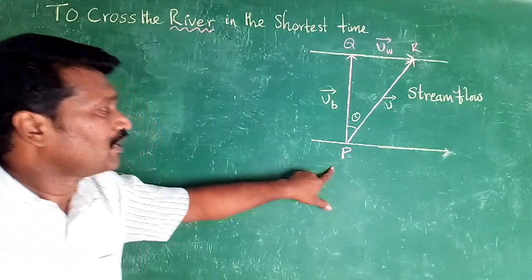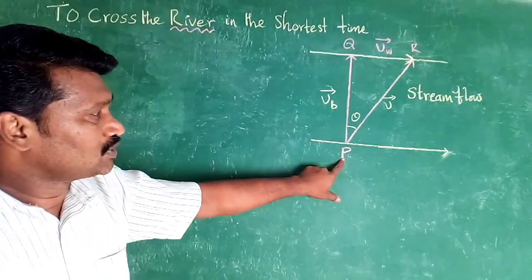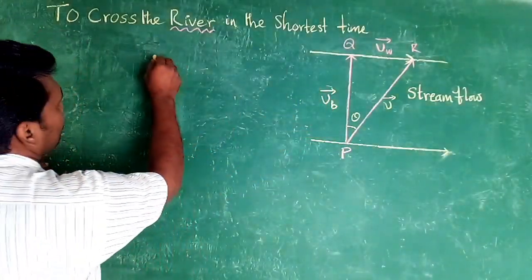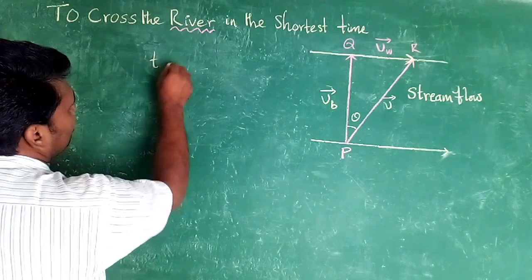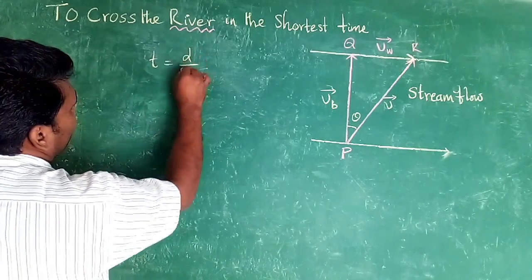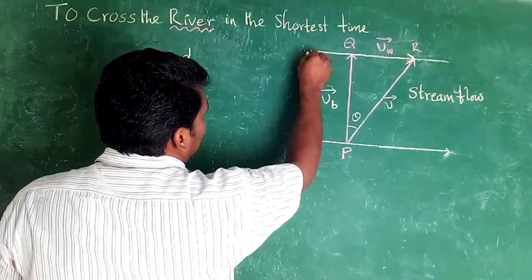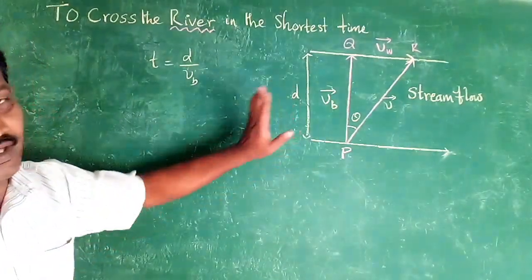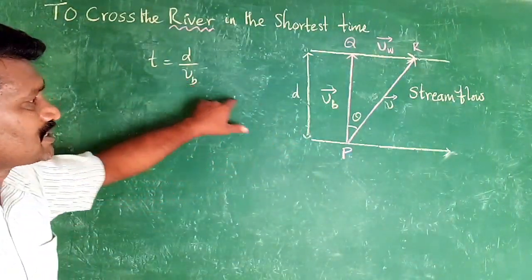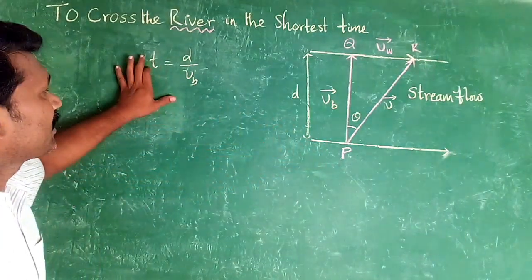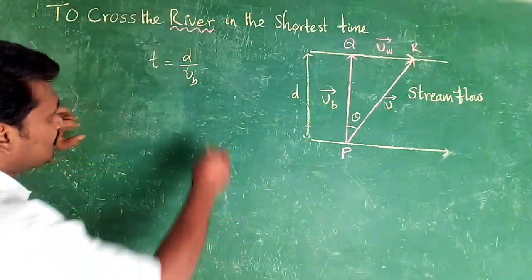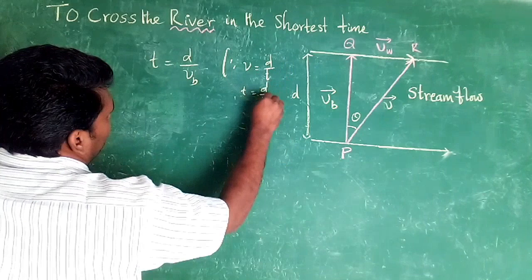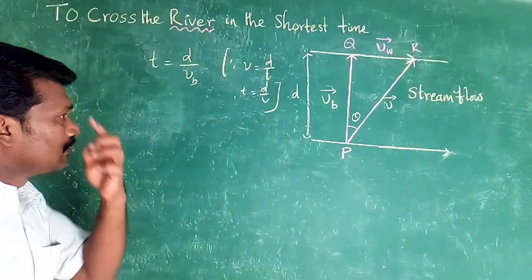The shortest time for a boat from P to Q is T equal to D by V, where D is the width between the two banks of the river and V is the speed of the boat. Time is equal to distance by speed, so T is equal to D by V.